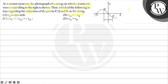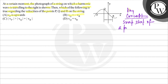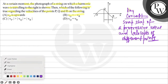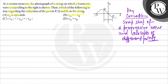The key concept here is the snapshot of a progressive wave and the velocities of different parts of it. The velocity at any point is nothing but minus of the velocity of the wave multiplied by dy/dx, where dy/dx is the slope. This gives us the velocity of each point on the wave.